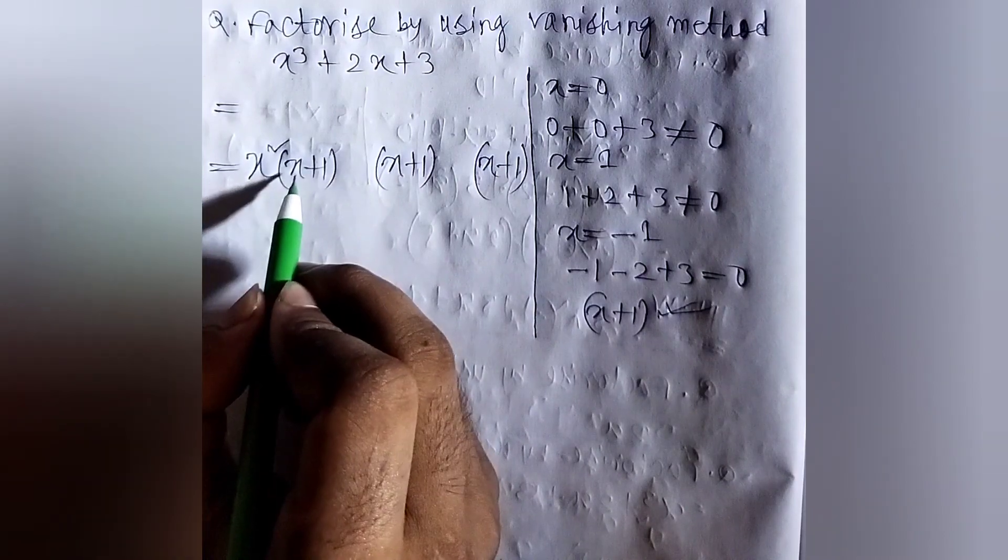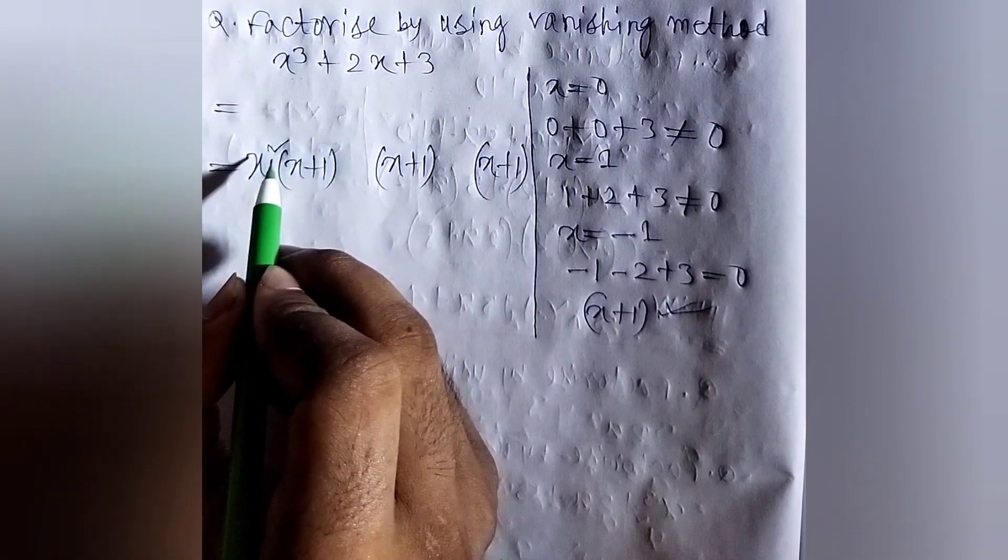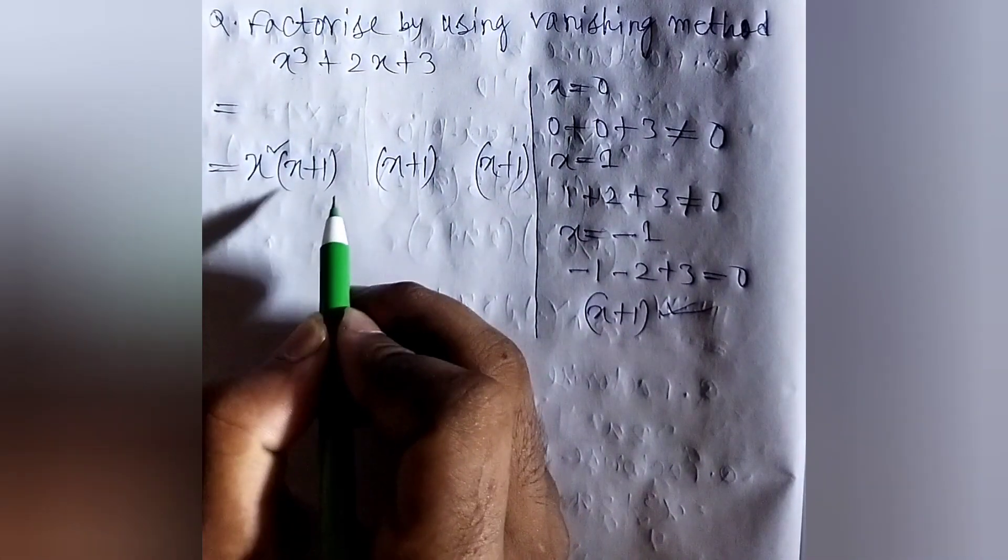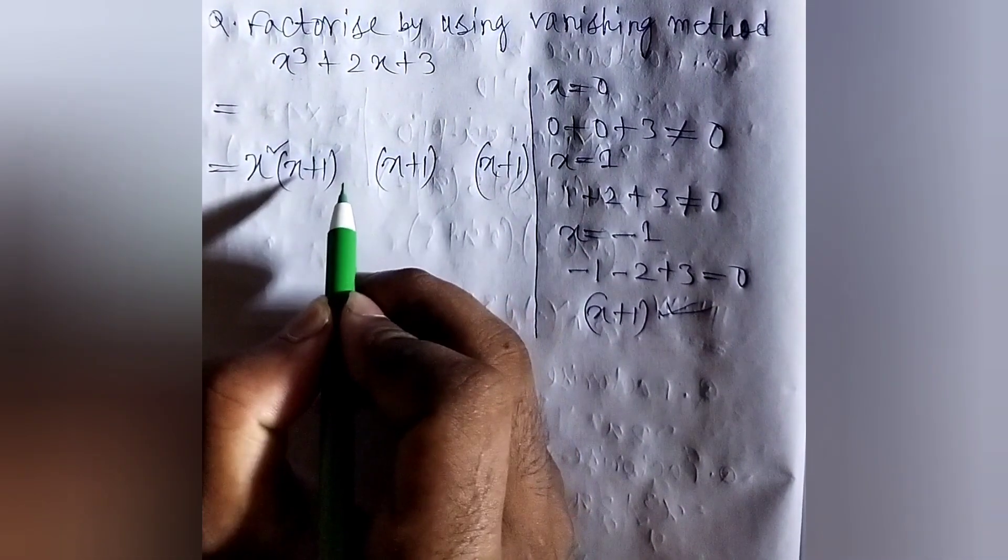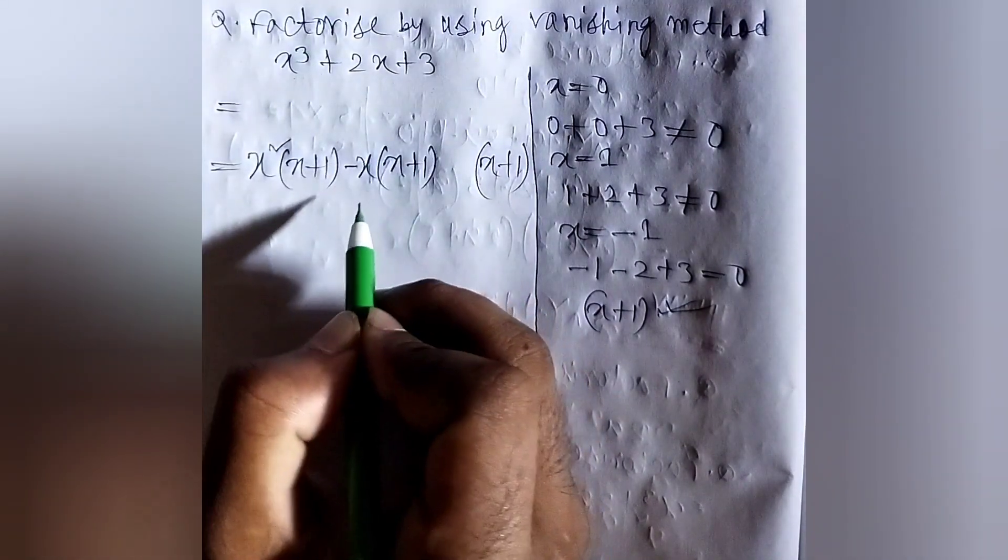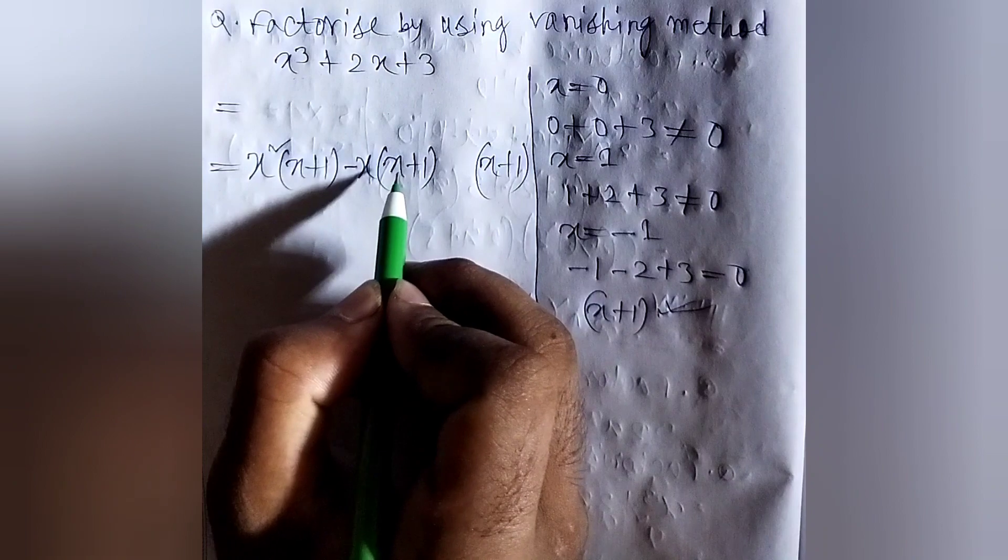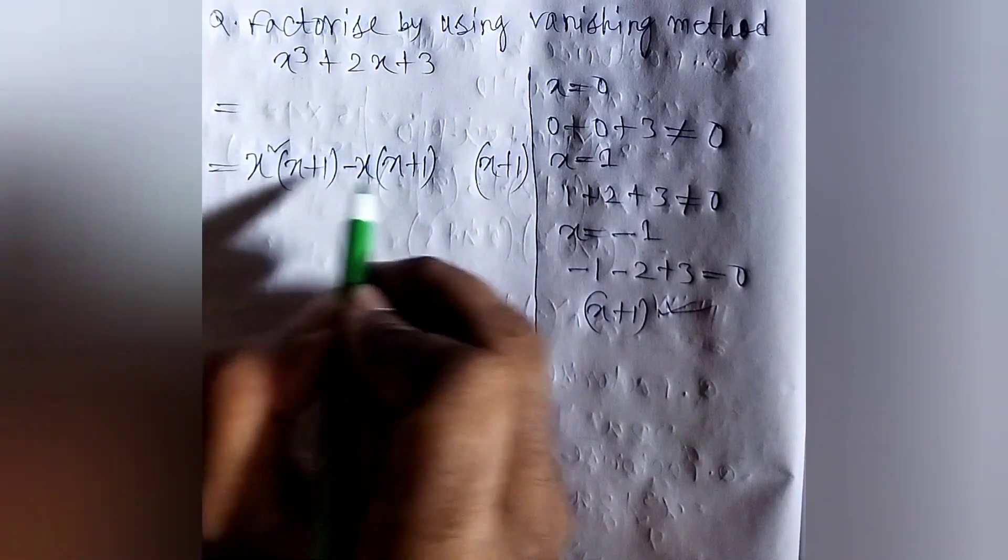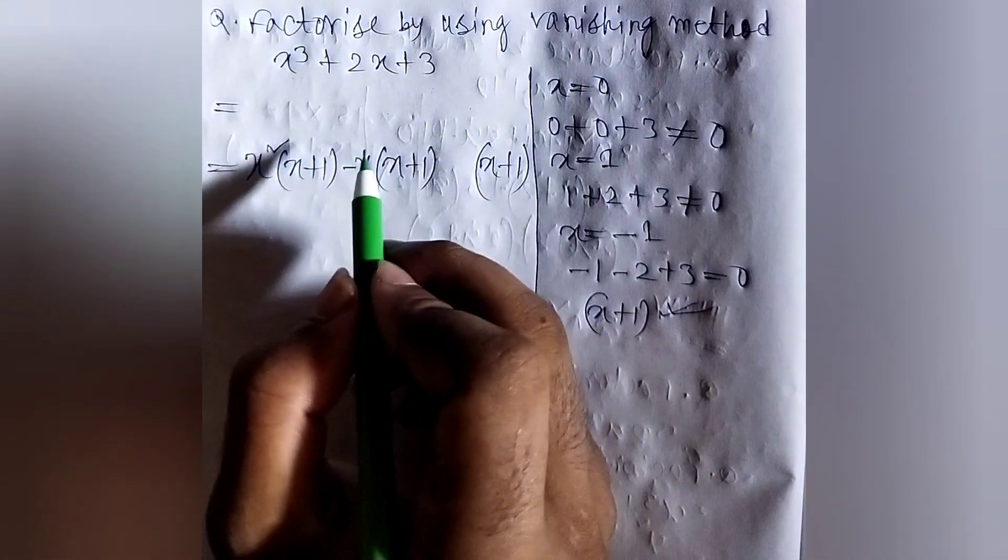So, x squared after multiplying by x will become x cube plus x squared. But there is no x squared term, so we have to eliminate the x squared. So, here we will take minus x. If we take minus x here, it will be minus x squared. So, plus x squared minus x squared, x squared will be eliminated.